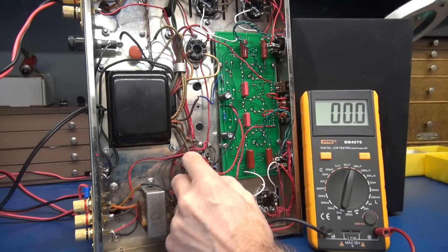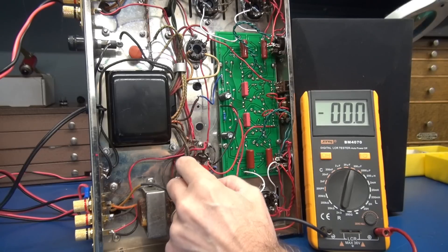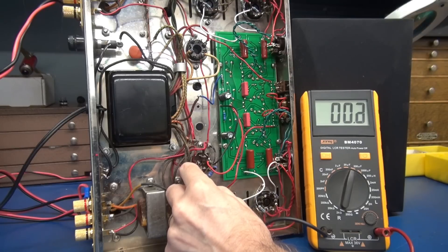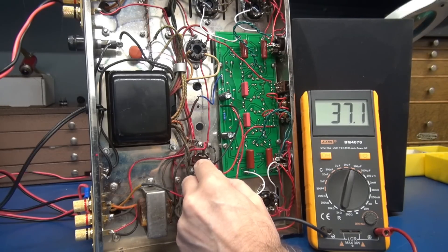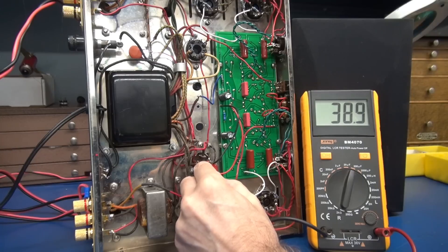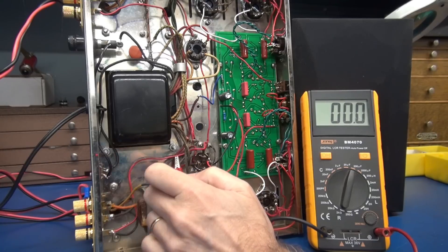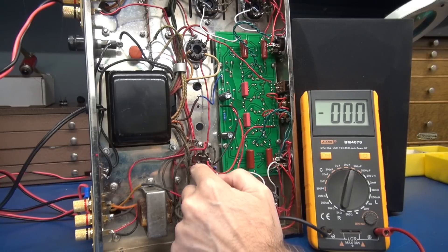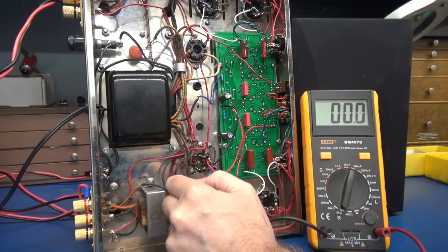Here is section one that comes right off the rectifier tube. There's nothing on the meter. Then you go through the choke, and sections two and three are connected together. Nothing. We go through this resistor, and there I have 39 microfarads. To my surprise, sections one, two, and three are obviously open on the CE manufacturing filter cap.